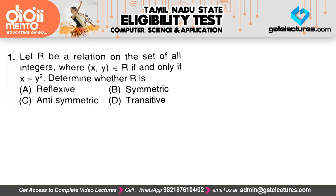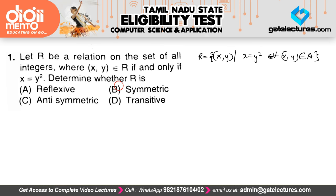We have the relation R defined such that X comma Y is in R if and only if X equals Y squared, for all elements X comma Y belonging to a particular set A. We have to determine whether this relation is reflexive, symmetric, anti-symmetric, or transitive. I hope you have already seen my lectures on reflexive, symmetric, anti-symmetric, and transitive relations. If not, go back to my discrete mathematics videos and read the topics on relations before continuing.